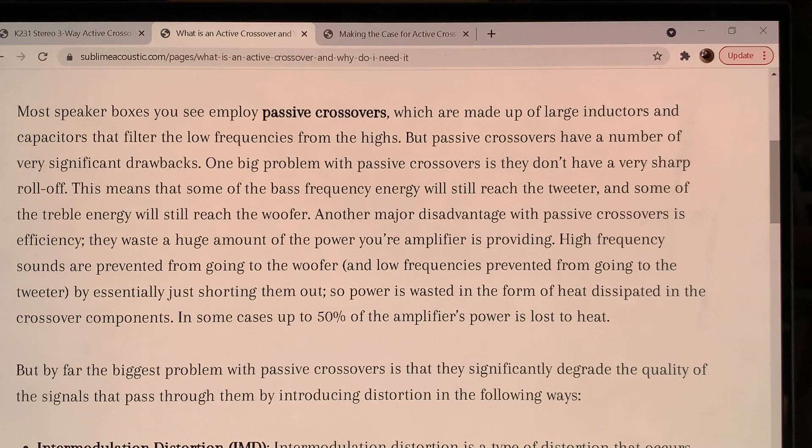Passive crossovers have a number of very significant drawbacks. One big problem with them is that they don't have a very sharp roll-off. What this means is that some of the bass frequency energy will reach the tweeter and some of the treble energy will still reach the woofer. Now I have to really, really stop here.